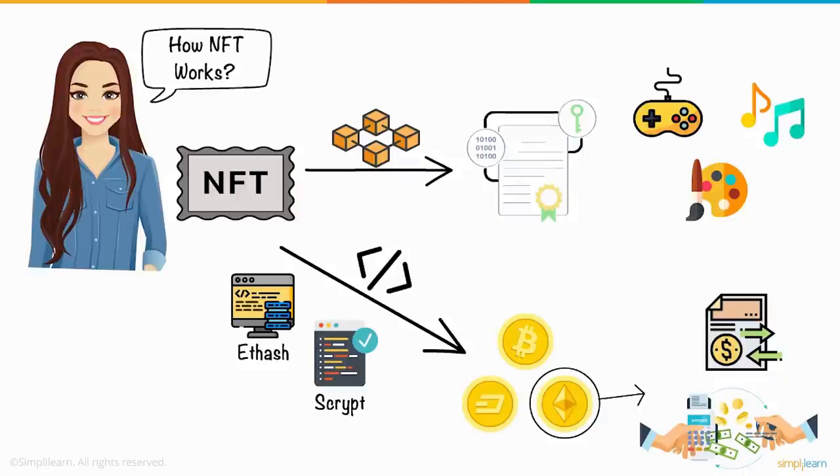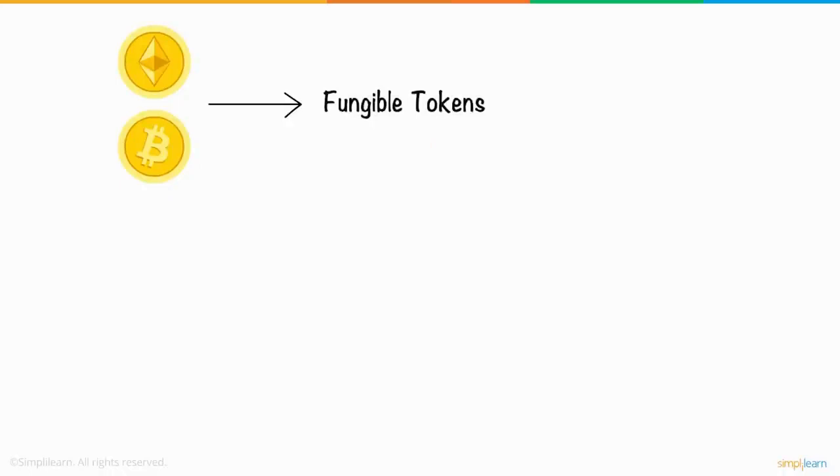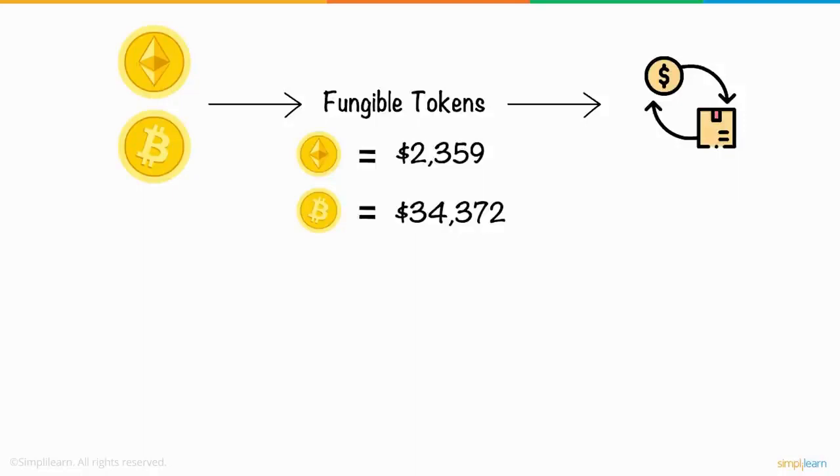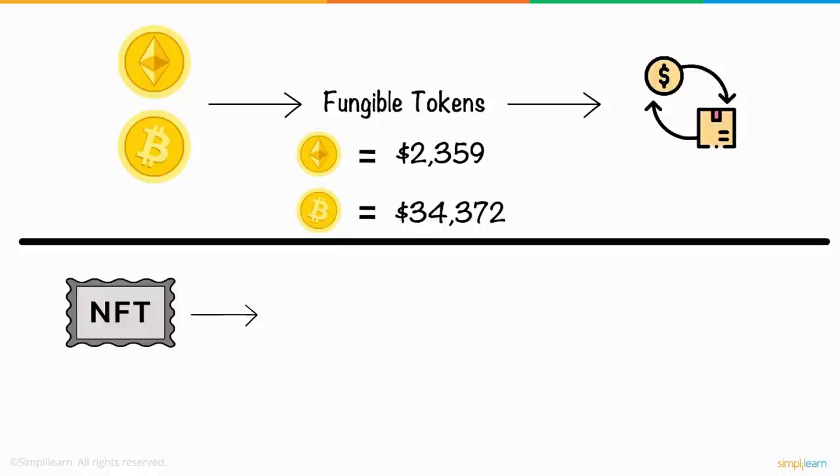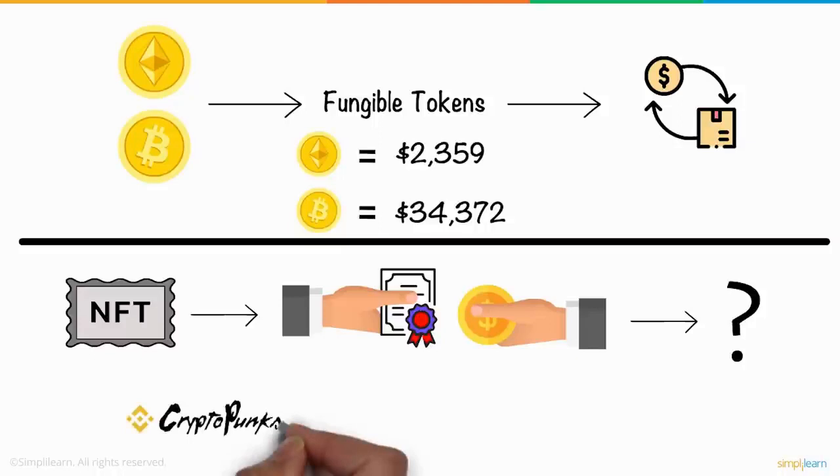However, NFT is quite different from these cryptocurrencies. Bitcoin and Ethereum are fungible tokens, which means if you trade Bitcoin or Ethereum for one another, you will have the same value or item in return. Basically money. On the other hand, NFT is a unique token, therefore if you try to trade it, you may end up with something completely different in your hands.